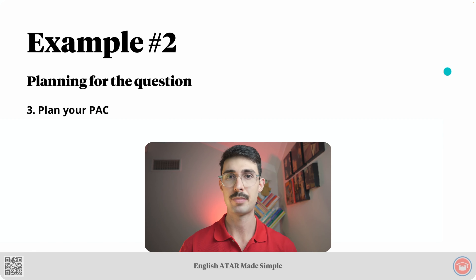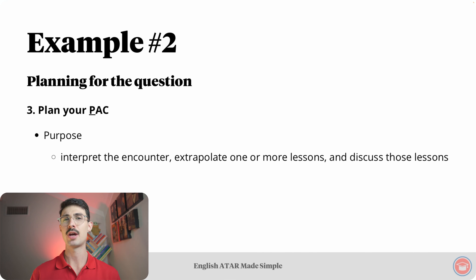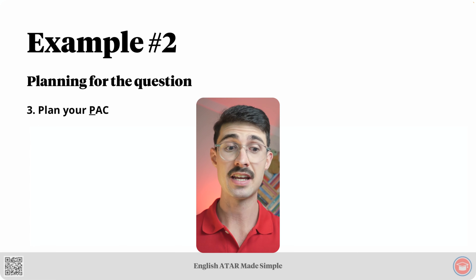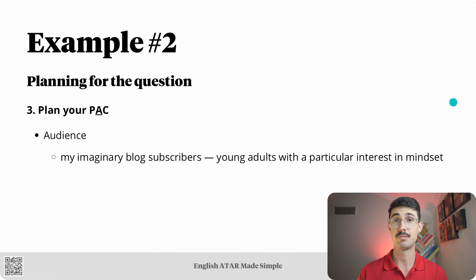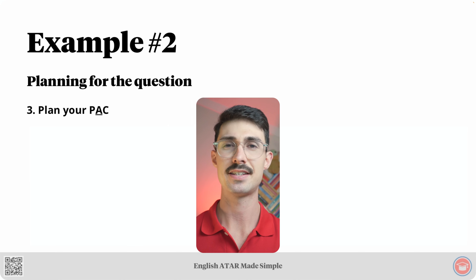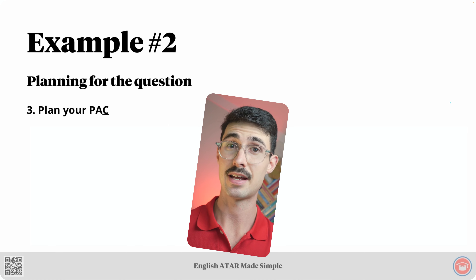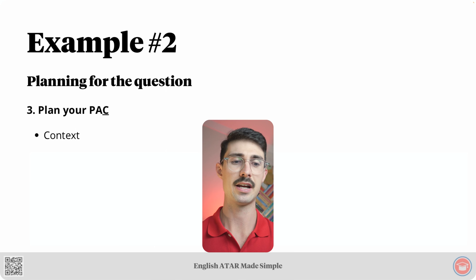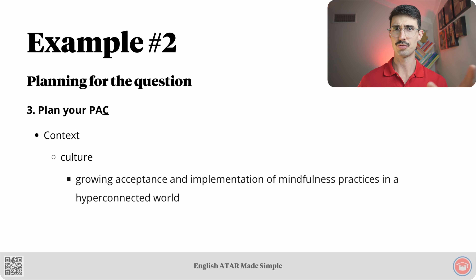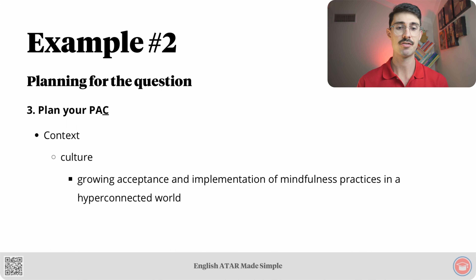Step number three: plan your PAC. The P stands for purpose — the purpose of my blog post is to firstly interpret the encounter, extrapolate one or more lessons from it, and then discuss those lessons. The A stands for audience — my audience are my imaginary blog post subscribers, particularly young adults with a particular interest in mindset. The C stands for culture. A relevant cultural point is the growing acceptance and implementation of mindfulness practices in the hyper-connected world in which we live.